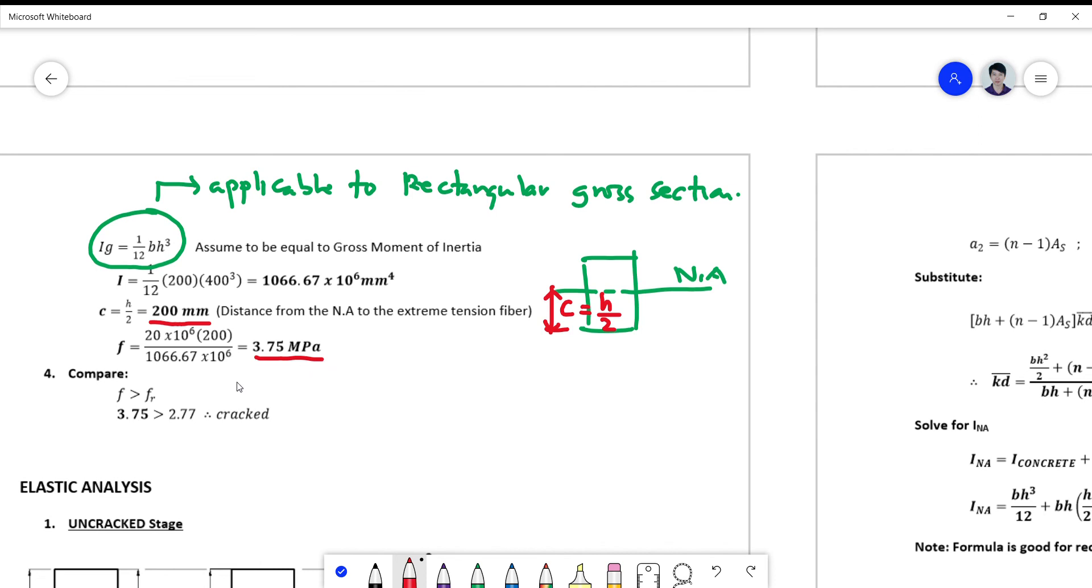So we compare the two. ft or f is compared to fr, or the modulus of rupture or the cracking stress. And we note that f is greater than fr. Therefore, if the actual stress exceeds the limit stress or the cracking stress, which is the limit at which the concrete material can only withstand, so we now conclude that the section is cracked.